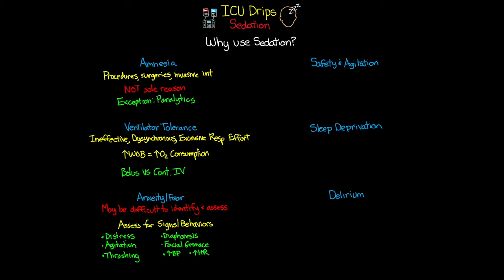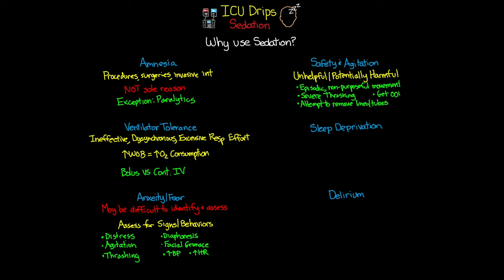The fourth reason is patient safety and agitation. We can see agitation manifest in ways that are unhelpful or potentially harmful. Patients may be aware but unable to communicate the source of agitation, or they may be completely unaware. Typically this manifests as episodic non-purposeful movements, severe thrashing, attempting to remove lines and tubes, or trying to get out of bed. In these cases sedation is of real benefit in preventing agitation and keeping patients safe.